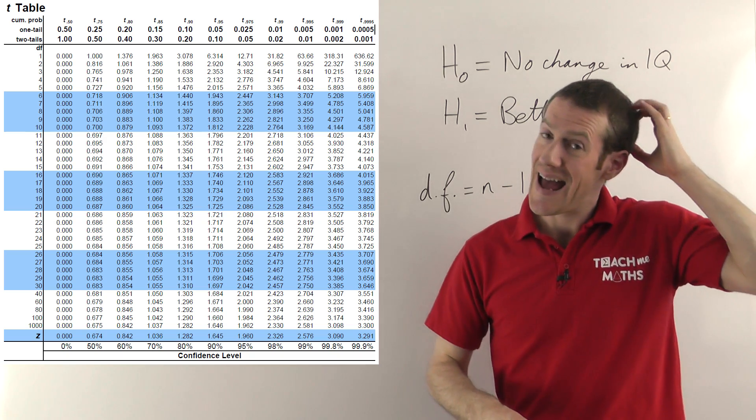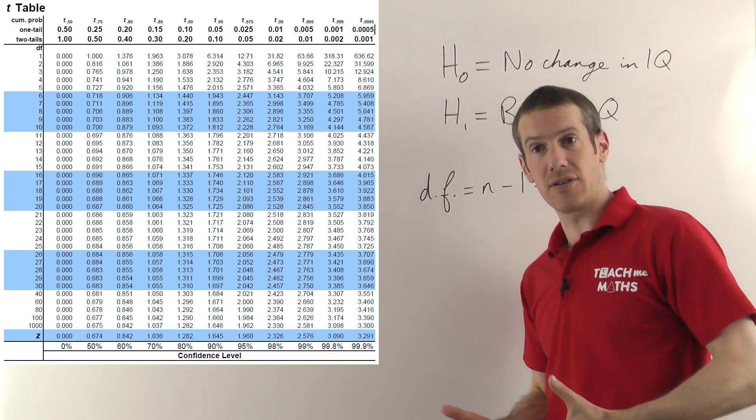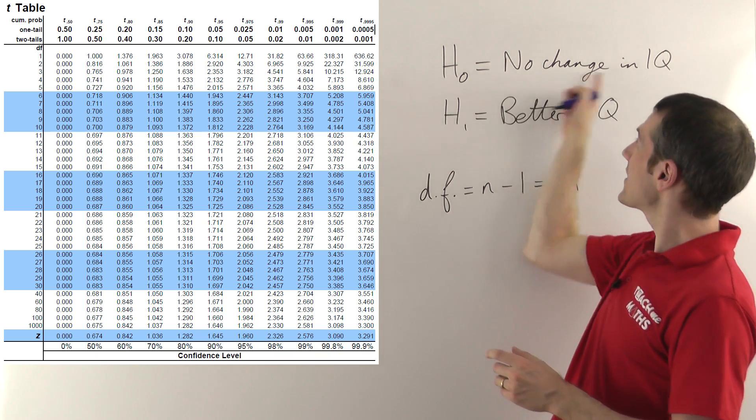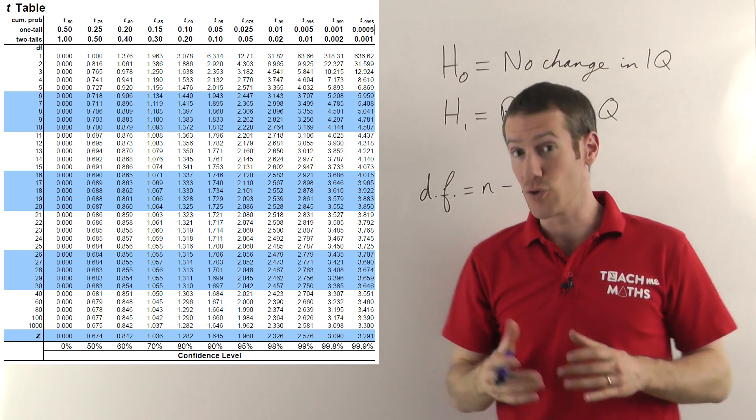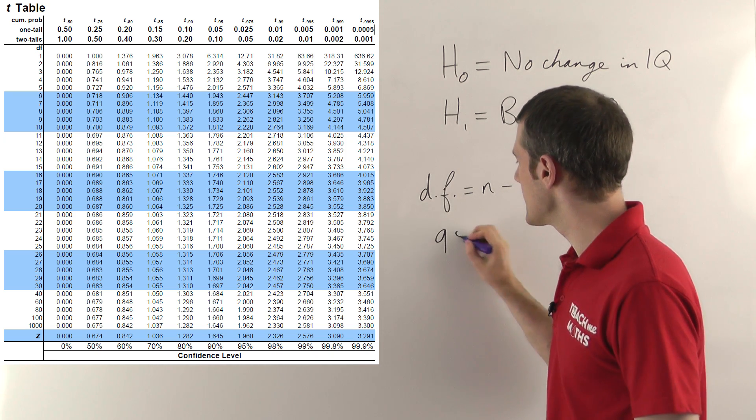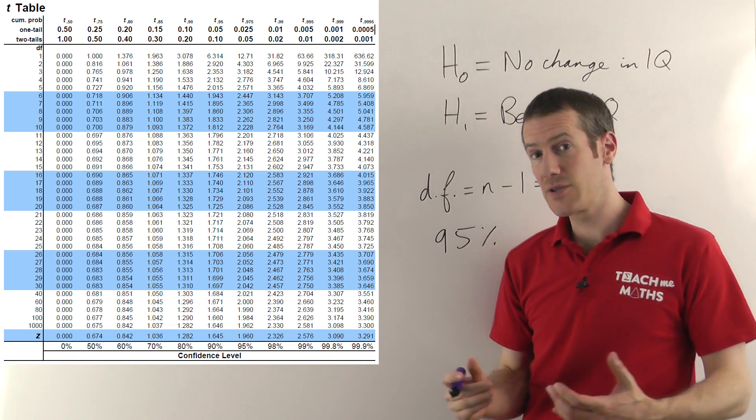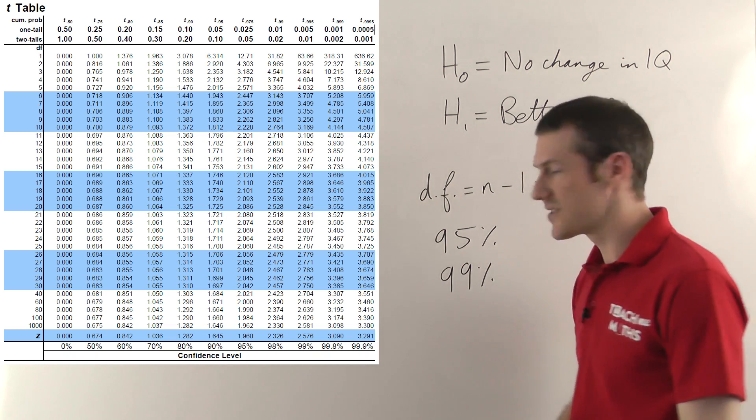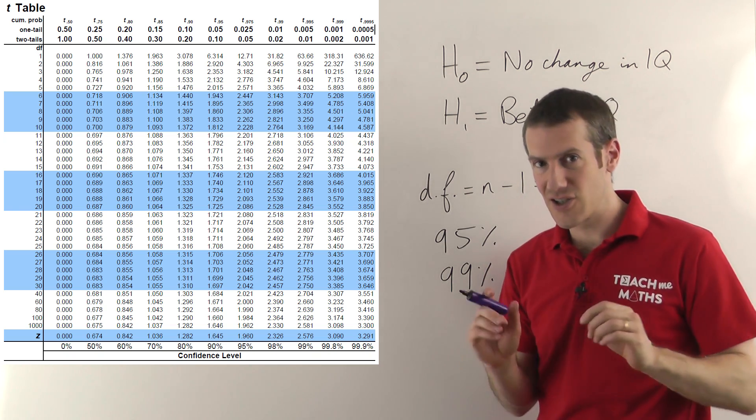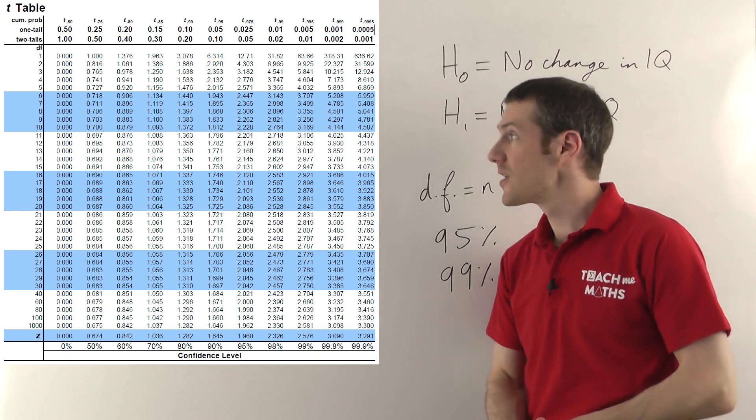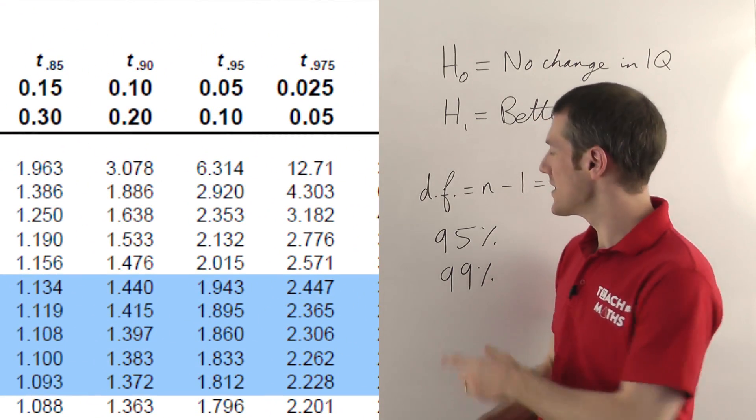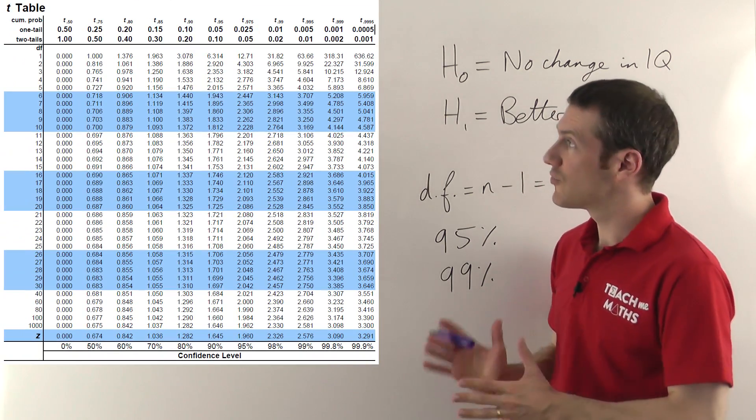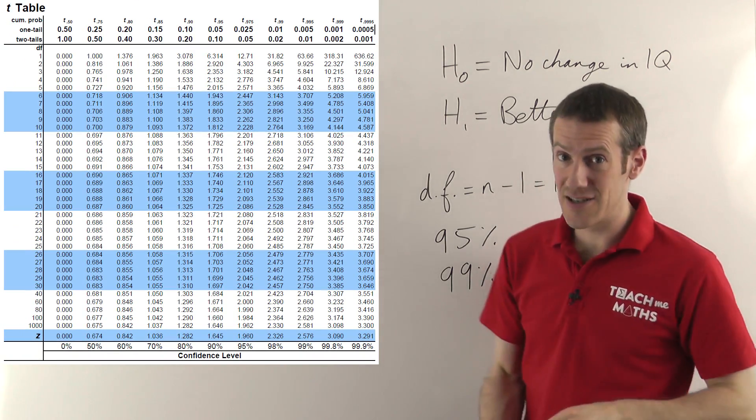Once we've found that, we need to decide how confident we want to be in our results. To cut a long story short, the level at which you can say you reject the null hypothesis and you're happy to accept the alternative hypothesis is the 95% level. In some situations you might want to go to the 99% confidence level, but the 95% is usually considered good enough for most purposes. So that's the one we'll use. So if you look along the top of the table, you're looking for the 0.95 or 0.950, and then you cross-reference that with the 19 degrees of freedom.